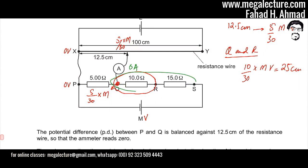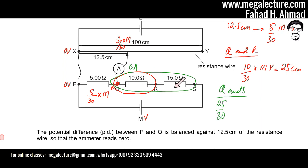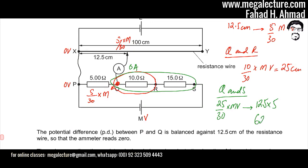Between Q and S, the combined resistance is 25 ohms (10 + 15), so the voltage is (25/30)mVolt. Comparing with the reference: (5/30)mVolt is 12.5 cm, so we multiply 12.5 by 5 to get the corresponding length, which gives 62.5 centimeters.